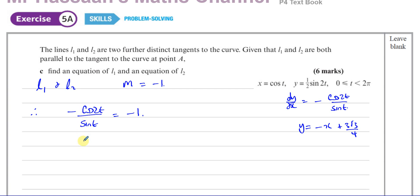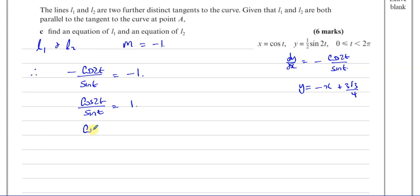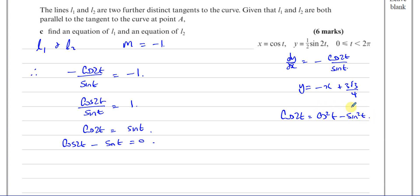We can say cosine 2t over sine t equals 1, so cosine 2t equals sine t, giving cosine 2t minus sine t equals 0. Using the double angle formula, cosine 2t equals cosine²t minus sin²t, which we can rewrite in terms of sine as 1 minus 2sin²t. So: 1 minus 2sin²t minus sin t equals 0.